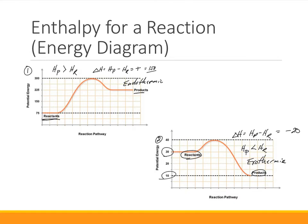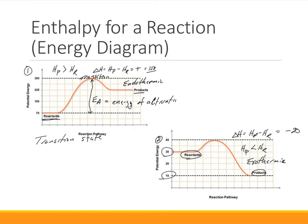There are a couple of other salient points you need to know about these graphs. The energy between the hump and where we start in the reactants — this hump is called the transition state, which is intermediate between the reactants and products and is an unstable entity. The energy of activation, EA, is the minimum energy needed to make the reaction go — it is the energy between the reactants and the transition state. For an endothermic reaction, there's a lot of energy that has to go in for the reactants to reach the transition state and become products.